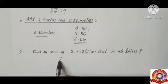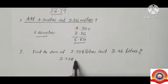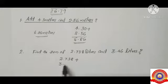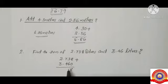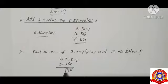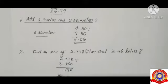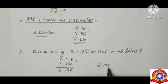Sum means addition: 2.738 plus 3.46. Working through the decimal places: 8 plus 0 is 8, 3 plus 6 is 9, 7 plus 4 is 11 — write 1 and carry 1. In the whole part: 1 plus 2 is 3, then 3 plus 3 is 6. So the answer is 6.198 liters.